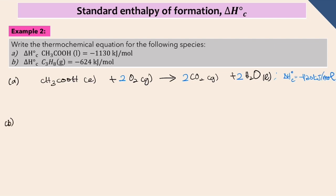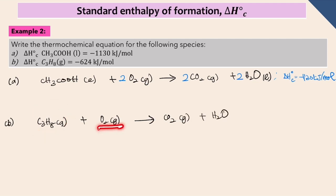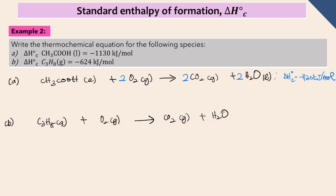For question B, the thermochemical equation for standard enthalpy of combustion: C3H8 burns in excess oxygen to produce carbon dioxide and water. Balance this chemical equation as long as the target reactant remains 1 mole. After balancing, don't forget to write delta H_c^0 on the right side of the thermochemical equation.